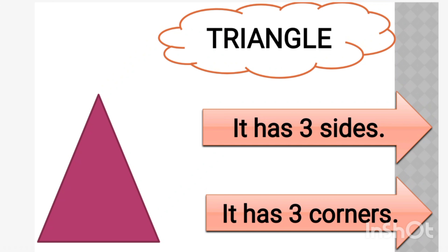In the next slide we can see the shape given is triangle. Triangle has how many sides and how many corners? Two points are given about triangle. The first point is it has three sides, and the second point is it has three corners.